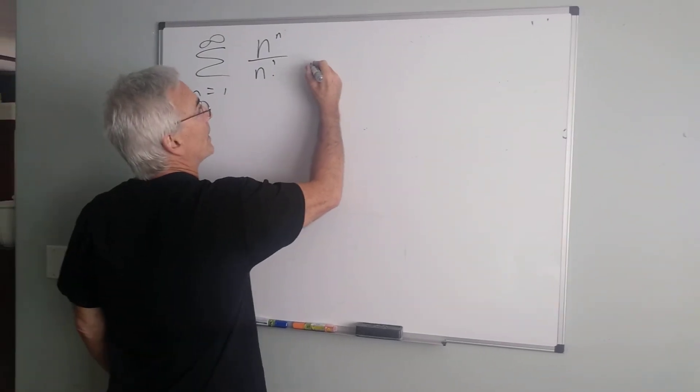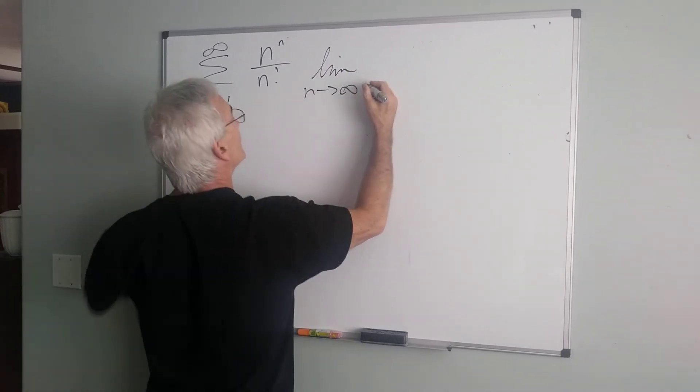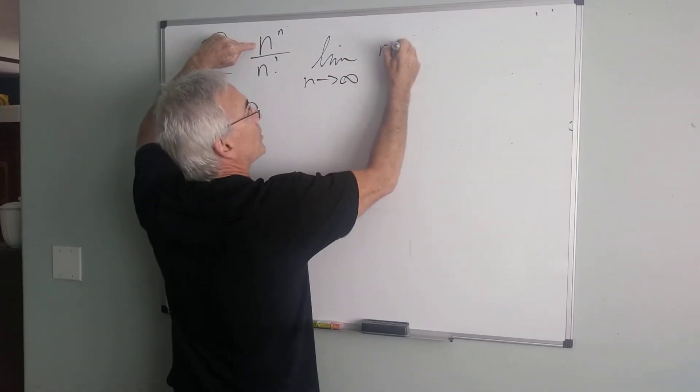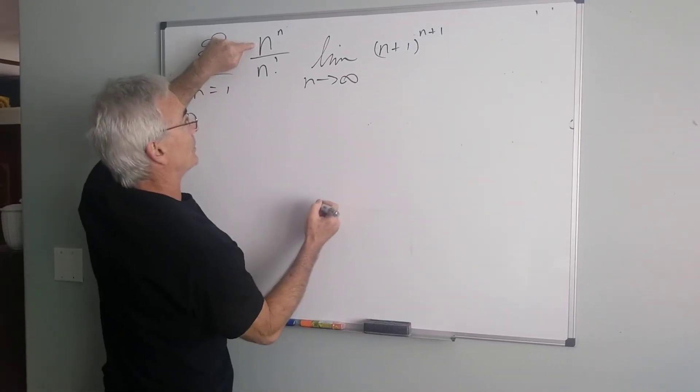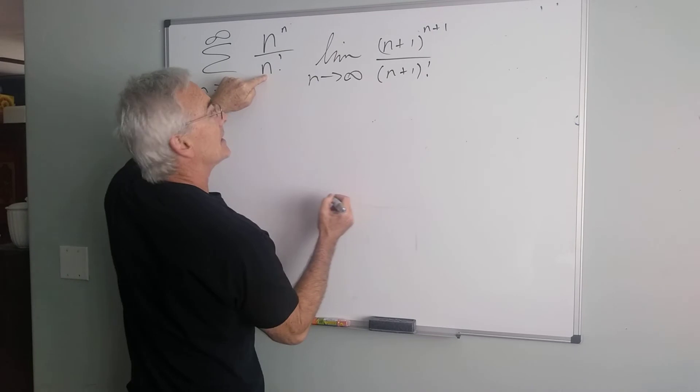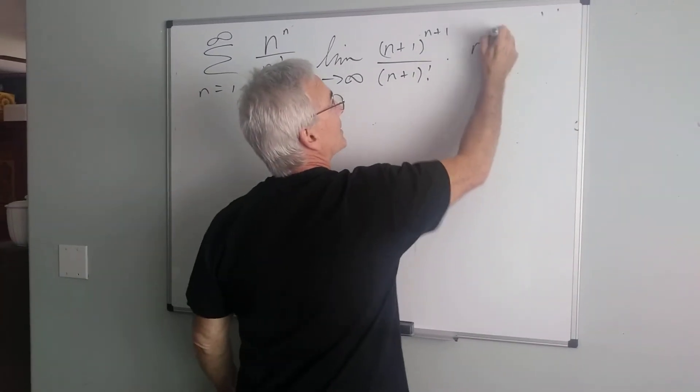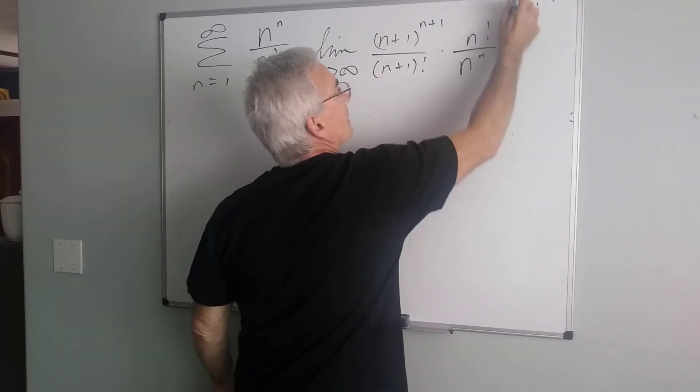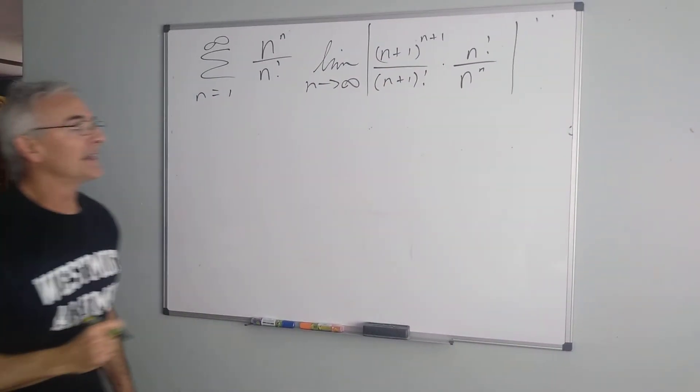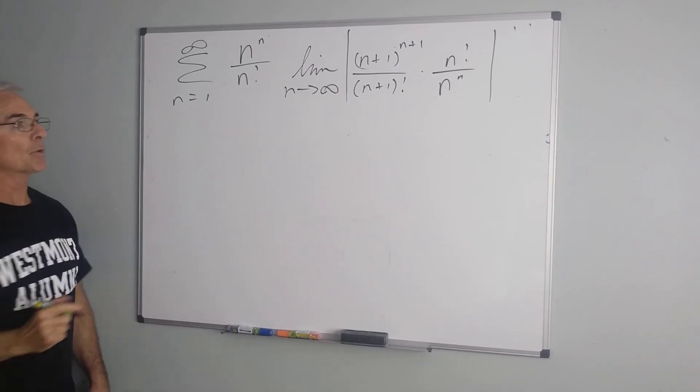When I perform the ratio test, and I take the limit as n goes to infinity, I replace n with n plus 1, both in the base and the exponent, and in the factorial term, then again, dividing by this entire quantity is equivalent to multiplying by its reciprocal. Now, I can easily expand the factorials, but the exponentials are going to present a little more of an issue.